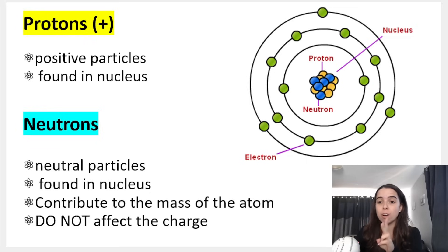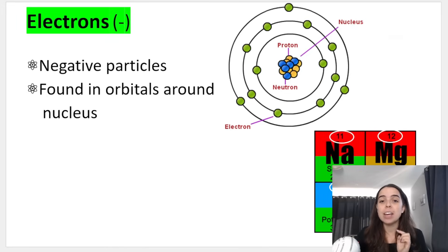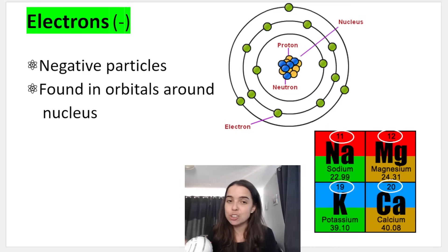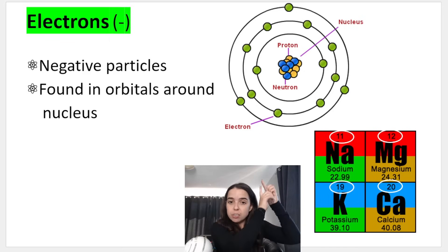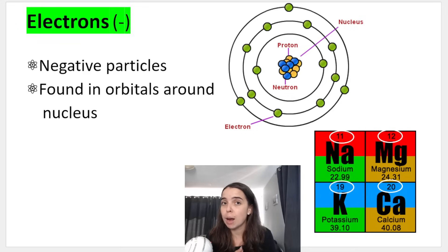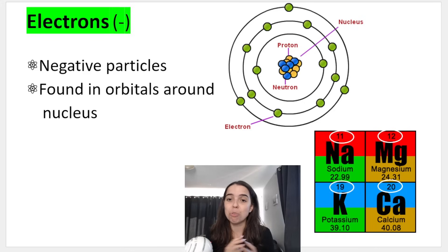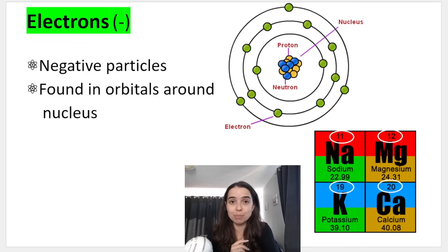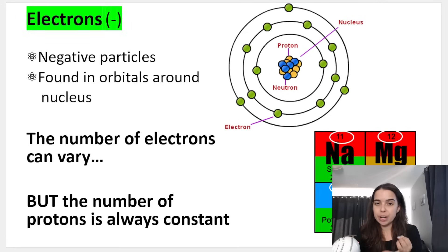Those are the two particles inside the nucleus at the center. On the outside of our atom, in orbitals, we have what we call electrons. Electrons are negative particles and they surround the nucleus in different orbitals. This is a very simplistic version of what an atom looks like. It's very important to know that electrons are always on the outside — they're involved in chemical bonding.